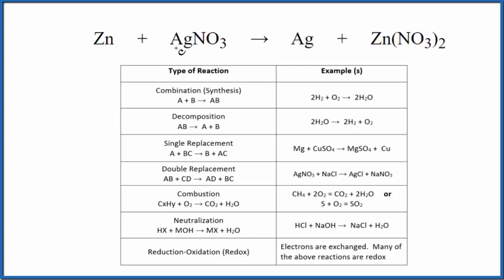When we look at the reaction, we see we have a metal here and a metal here. So if we have a metal by itself and then a metal bonded to this polyatomic ion or another element, we might have a single displacement reaction.